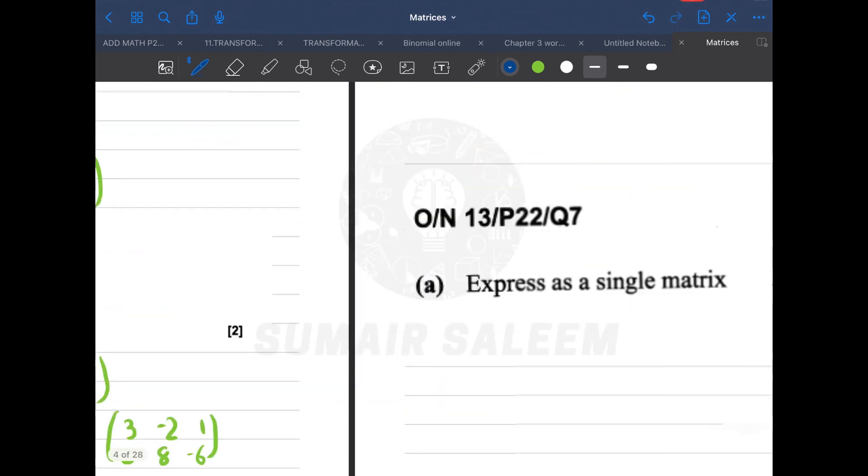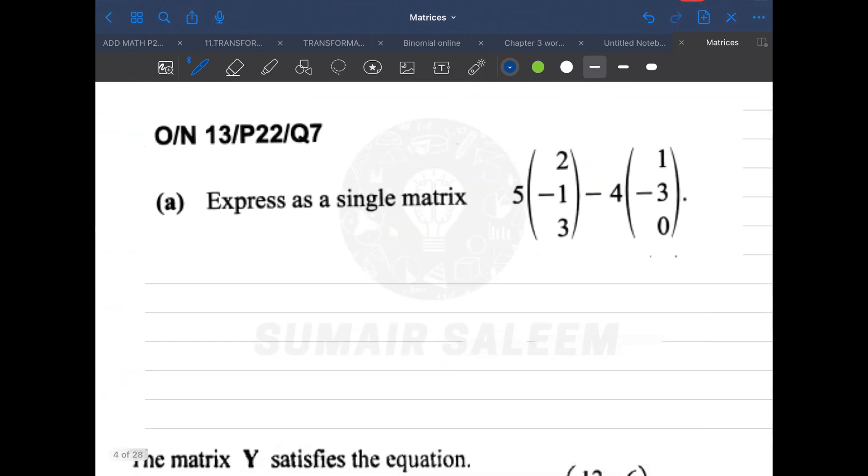Now let's practice two more questions. This one. 5 into 2 makes 10, -5, 15. Minus will stay in the middle. 4 into 1 is 4, -12, and 0. Now orders are same. I can easily subtract them. 10 minus 4 is 6, -5 plus 12 is 7, and 15 minus 0 is 15. You get this?